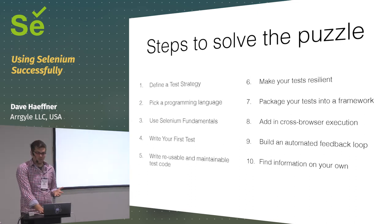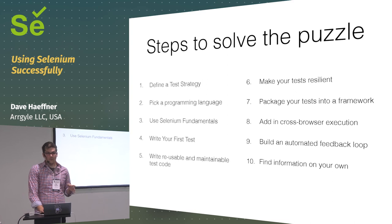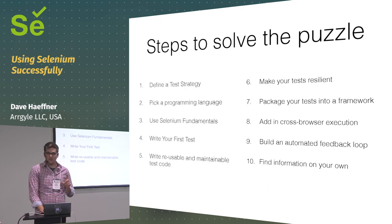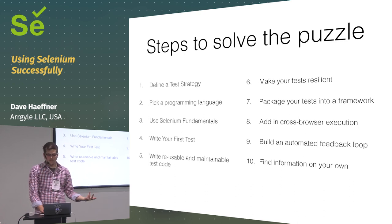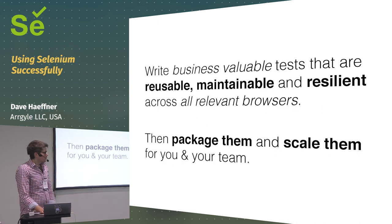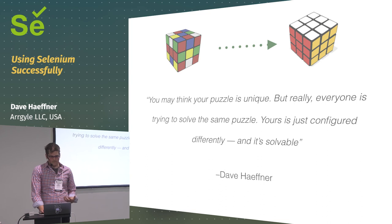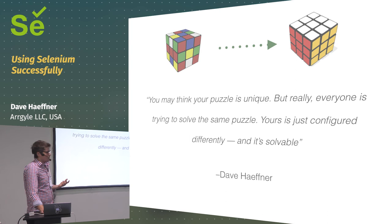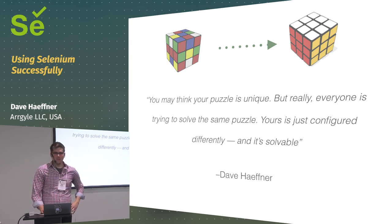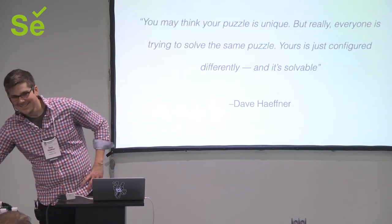To close out: my ten steps to solving the puzzle — define a test strategy to figure out what to test and on what browsers; pick a programming language; use Selenium for what it's good for; write introductory tests and refactor them for reusable, maintainable code; make tests resilient using explicit waits; package into a simple framework; add cross-browser execution; build an automated feedback loop; and continue finding information on your own. You end up with reusable, maintainable, resilient tests that you can scale for your team. As I like to say: you may think your puzzle is unique, but everyone's trying to solve the same puzzle — yours is just configured differently, and it's solvable.